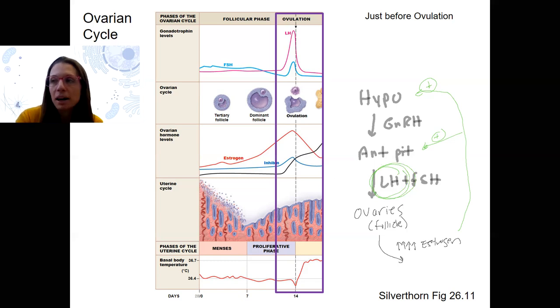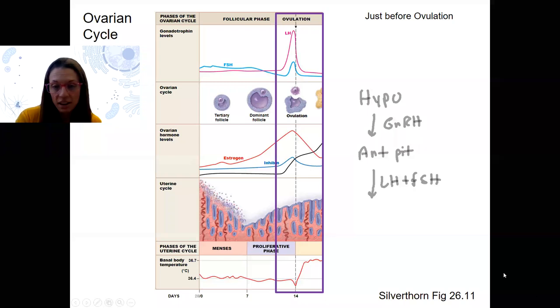Okay, so positive feedback needs to be turned off by some change in something. What's the change here? What's the event? The event is ovulation. So ovulation occurs. We then need to go back to negative feedback.